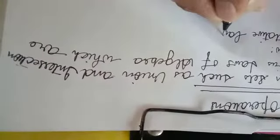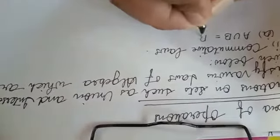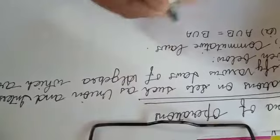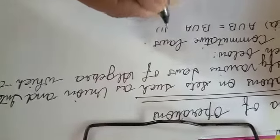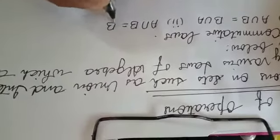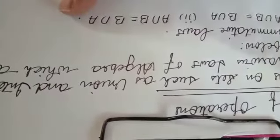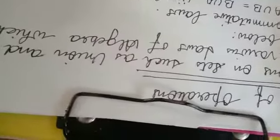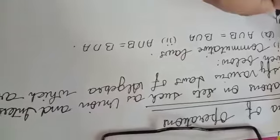Commutative law tells us that if we take A union B, it should be equal to B union A. Similarly, if we take A intersection B, it should equal B intersection A. So: A union B = B union A, and A intersection B = B intersection A.